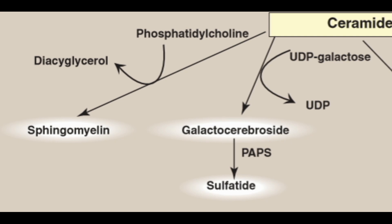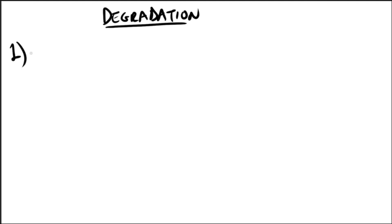Ceramide is the starting point. With the help of phosphatidylcholine you get sphingomyelin, and with the help of UDP-galactose you get a glycolipid or galactocerebroside. Sulfatides are produced after the addition of sulfate with the help of the enzyme sulfotransferase.